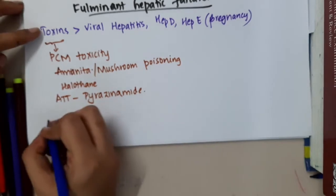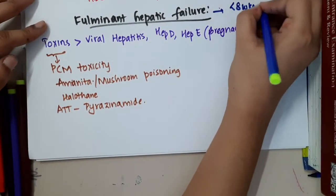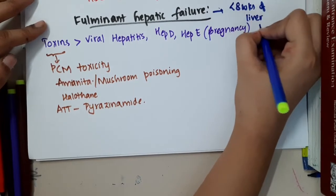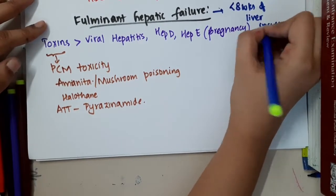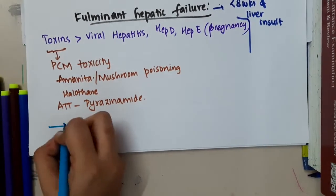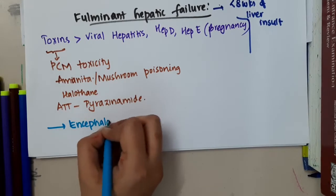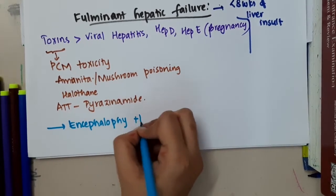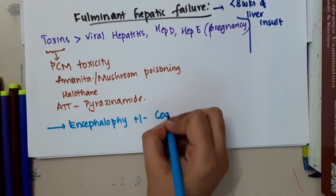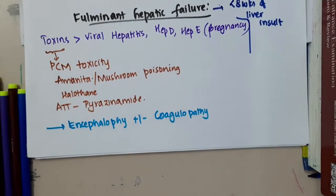So this fulminant hepatic failure occurs less than 8 weeks of liver insult. That is, it occurs very fast. So here the main important thing is you will see presence of encephalopathy will be seen. Coagulopathy are the main important features of fulminant hepatic failure.